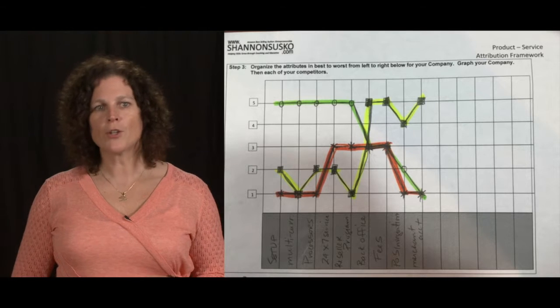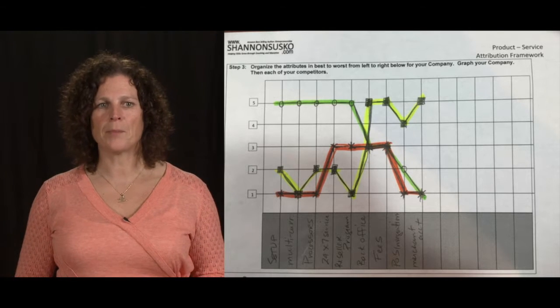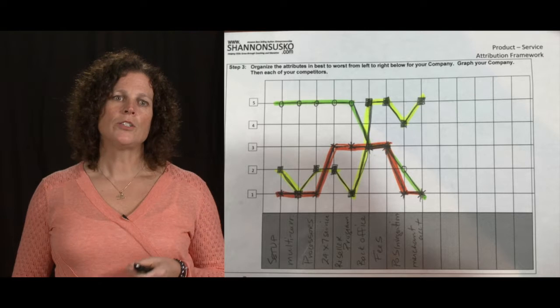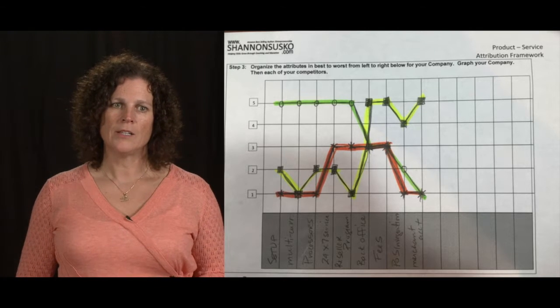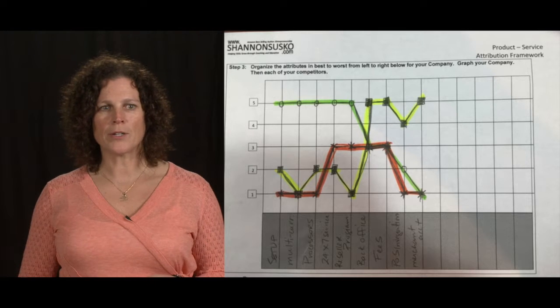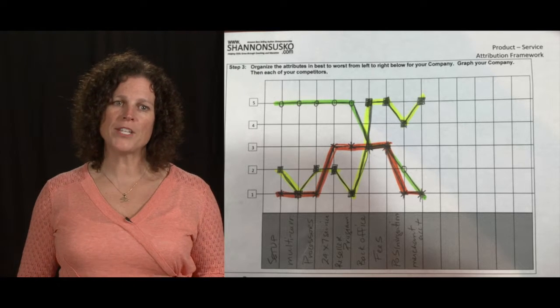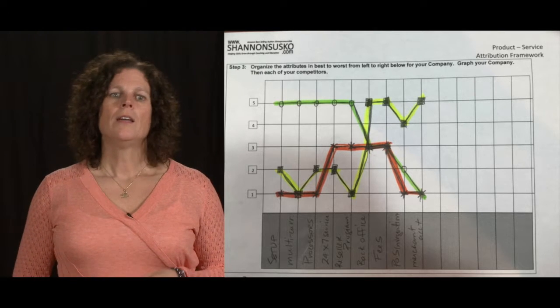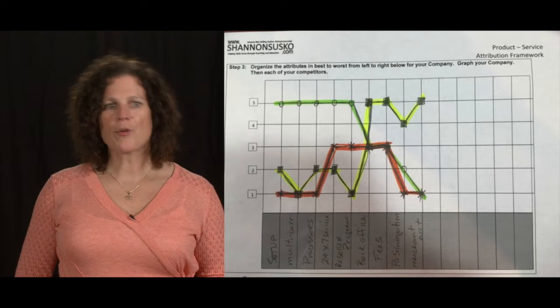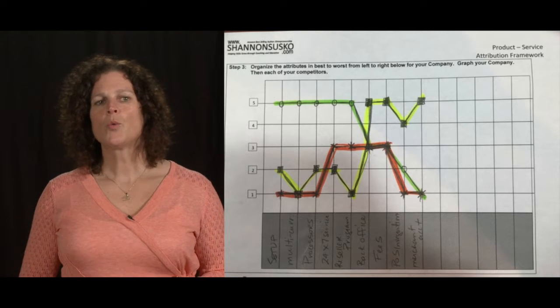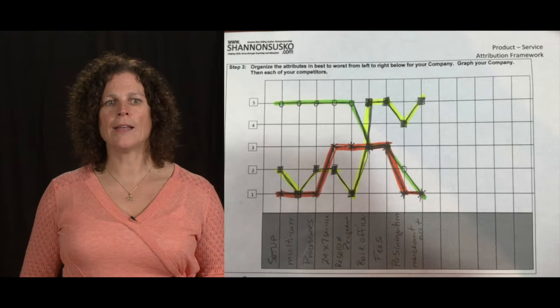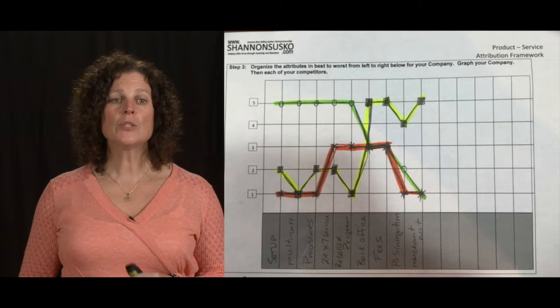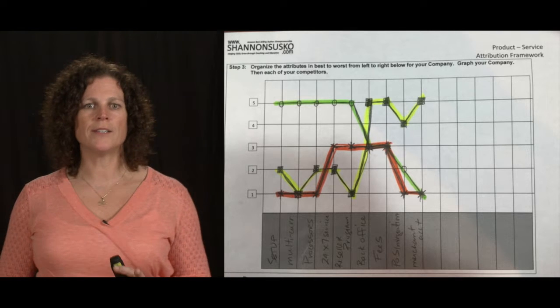In the graph you're looking at, the green line is my company. And we have decided to actually be really good at a few things. So setup of our customers, offer multi-currency, be able to map to any processor worldwide, 24-7 service, as well as having a reseller program. These were the five things that we decided to differentiate on.